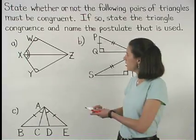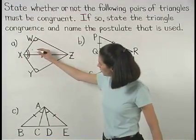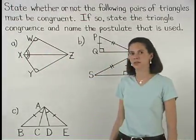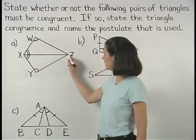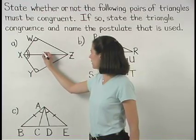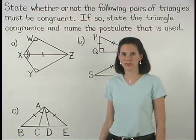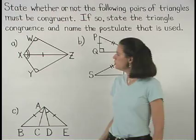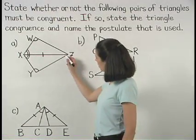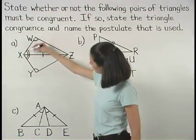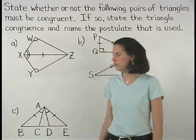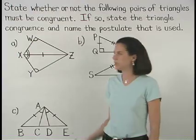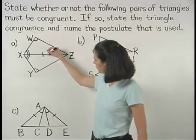In Part A, we have two pairs of angles that are marked as congruent, and also notice that these triangles share a side, so we can mark the side as congruent to itself. Notice that the side is not included between the two angles in each triangle, so we say that these triangles are congruent by angle, angle, side.